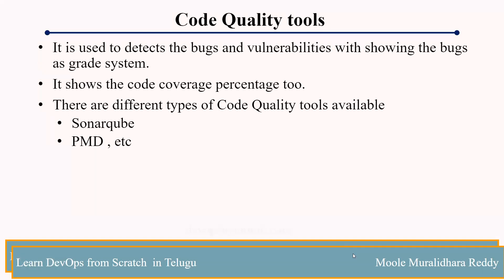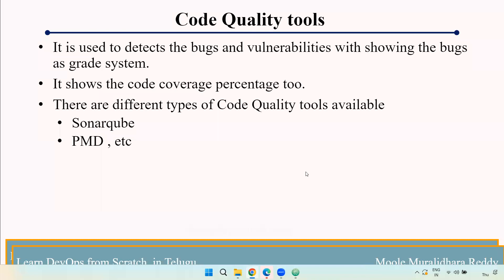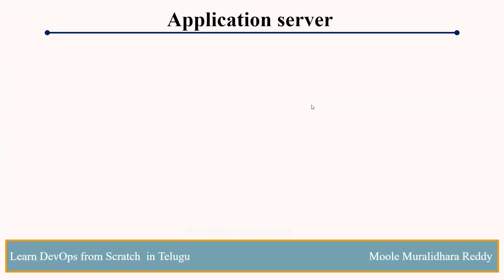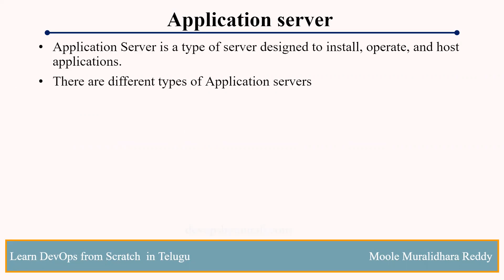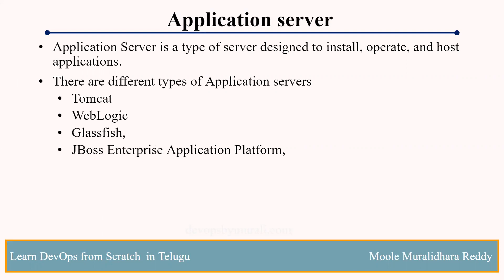Next, we will discuss the application server. If you are using a Java-based application, you need an application server to serve your web application through a GUI or workflow. Options include Tomcat, Weblogic, GlassFish, and JBoss Enterprise. The majority of projects use Tomcat. Tomcat is open source, and we will use Tomcat in our course to deploy Java-based web applications.